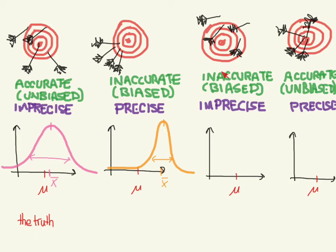Let's take a look at the inaccurate and imprecise case. The sample mean is far away from mu over here, so we say that it is inaccurate. And we also see that it's widely dispersed here as well, so that's why we would say that it's imprecise.